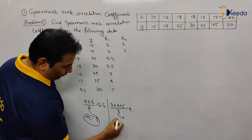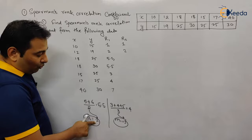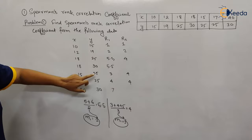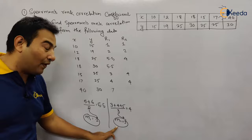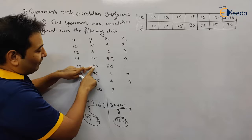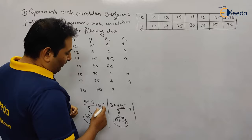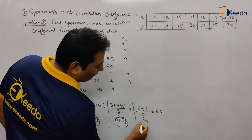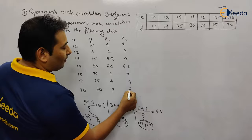So m1 = 2 (repeated twice) and m2 = 3 (repeated three times). Positions 3, 4, 5 are gone; the next available position is 6. But 30 is also repeated — it appears twice — so 30 occupies positions 6 and 7. Average: (6 + 7) / 2 = 6.5. This rank 6.5 is assigned to both 30s, and m3 = 2.